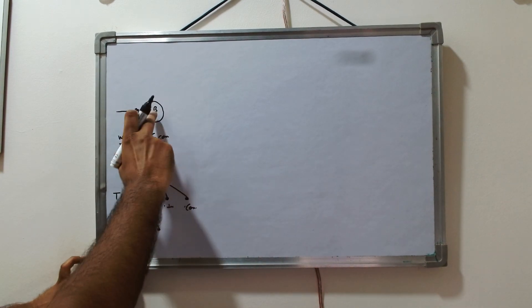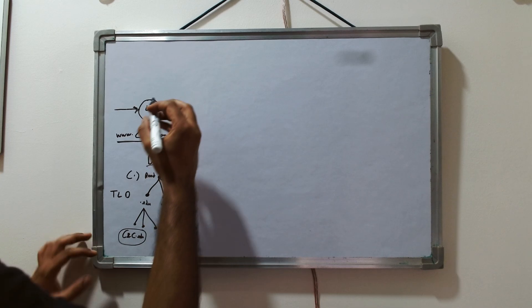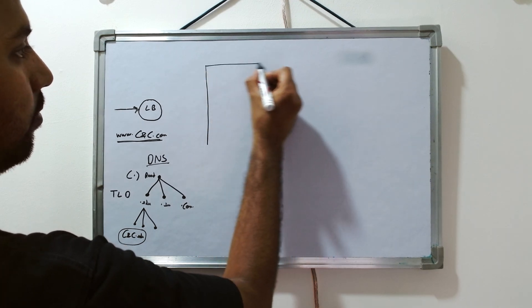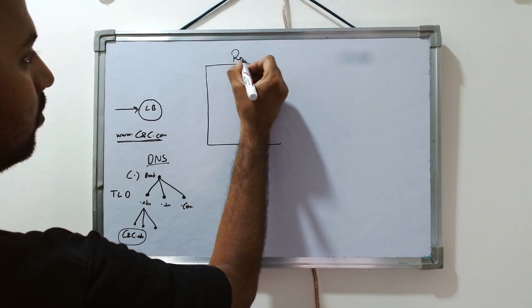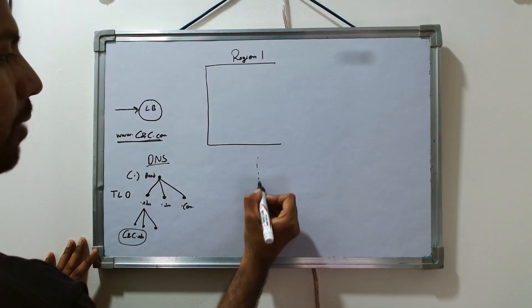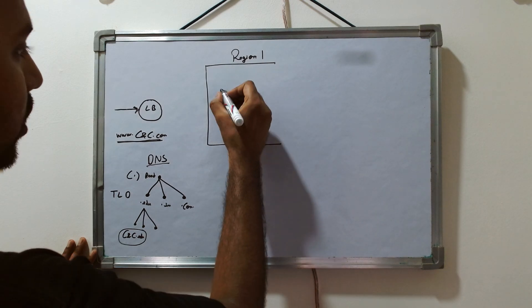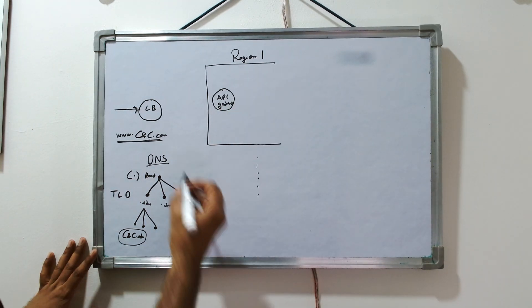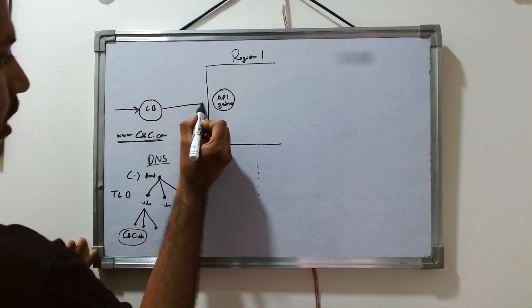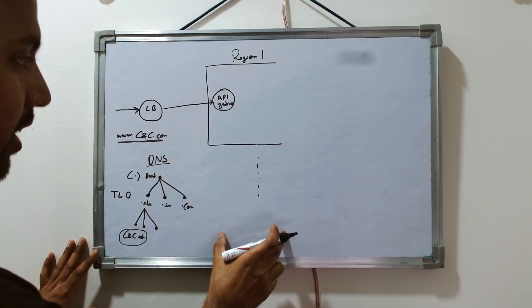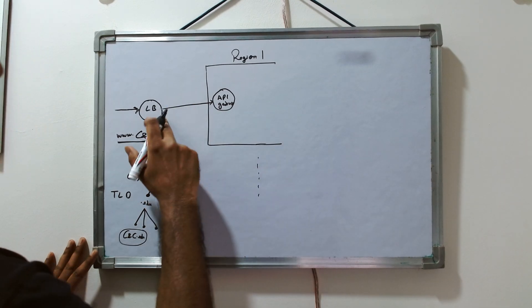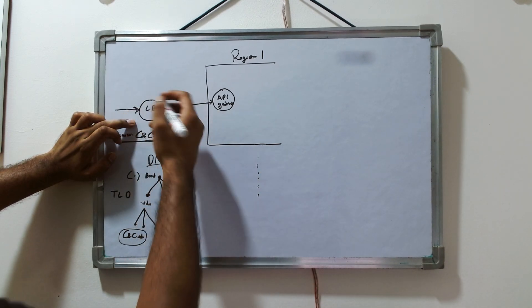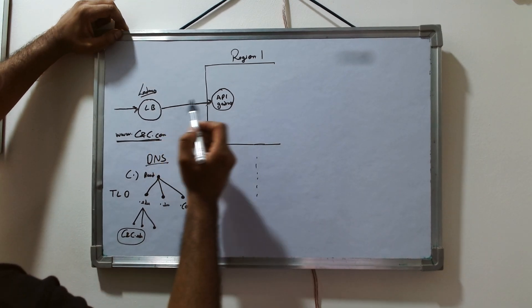Once DNS resolves the IP, your request lands at the load balancer. Another thing to understand is the concept of regions. There can be multiple regions, and each region has one API gateway. The load balancer passes the request to the API gateway of a specific region depending on the configuration.